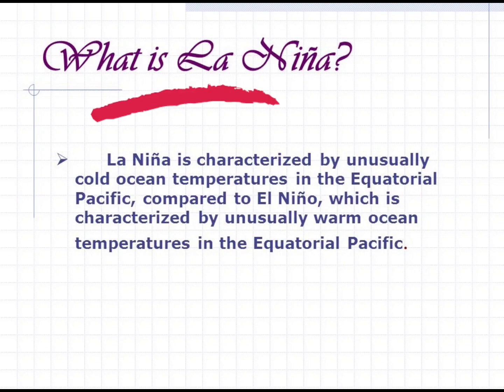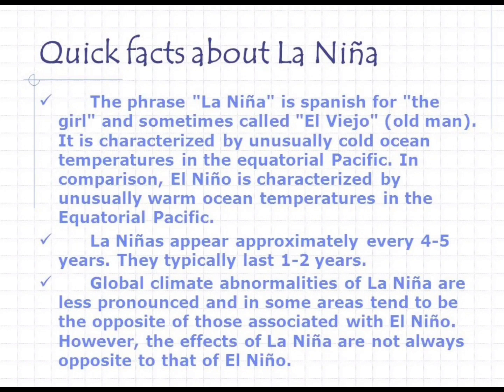What is La Niña? La Niña is characterized by unusually cold ocean temperatures in the equatorial Pacific, compared to El Niño which is characterized by unusually warm ocean temperatures. The phrase 'La Niña' is Spanish for 'the girl' and is sometimes called 'El Viejo.' La Niñas appear approximately every four to five years and typically last one to two years. Global climate abnormalities of La Niña are less pronounced and in some areas tend to be the opposite of those associated with El Niño.